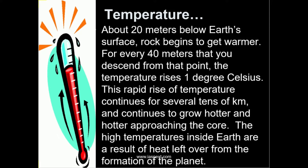A rise in temperature with a rise in depth is observed in mines and deep wells. The evidence of volcanoes and molten lava also supports this. In the very upper 100 kilometers, the rate of increase in temperature is about 12 degrees Celsius per kilometer. For the next 300 kilometers it is 20 degrees Celsius per kilometer. But going further deep, the rate reduces to merely 10 degrees Celsius per kilometer, meaning the rate of increase of temperature beneath the surface is decreasing towards the center.